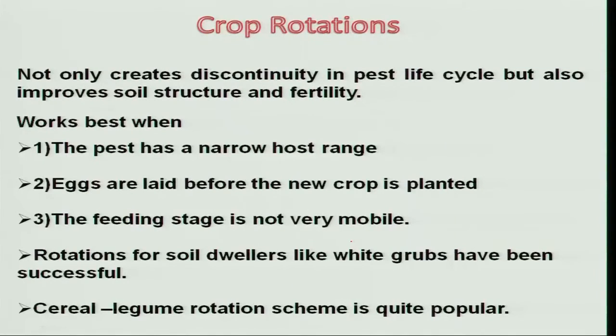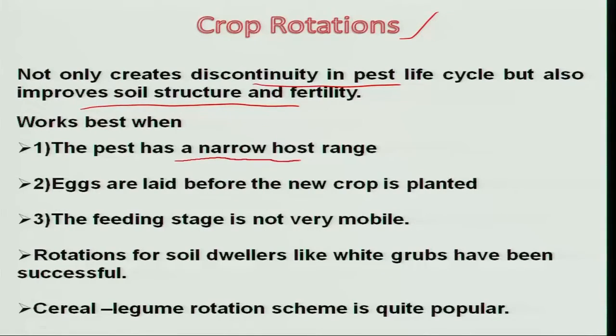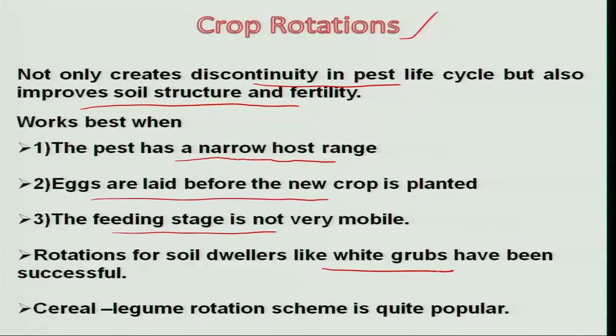Crop rotation not only creates a discontinuity in the insect life cycle, it also improves soil structure and fertility. This technique works most effectively when the pest has a narrow host range, eggs are laid before the new crop is planted, and the feeding stage of the insect is not very mobile. Rotations work well for insects like white grubs and redheaded hairy caterpillar. Crop rotation works better in the case of cereals and legumes — for example, sorghum and red gram share no common insects, so carry-over from one crop to another does not happen, automatically reducing insect populations.